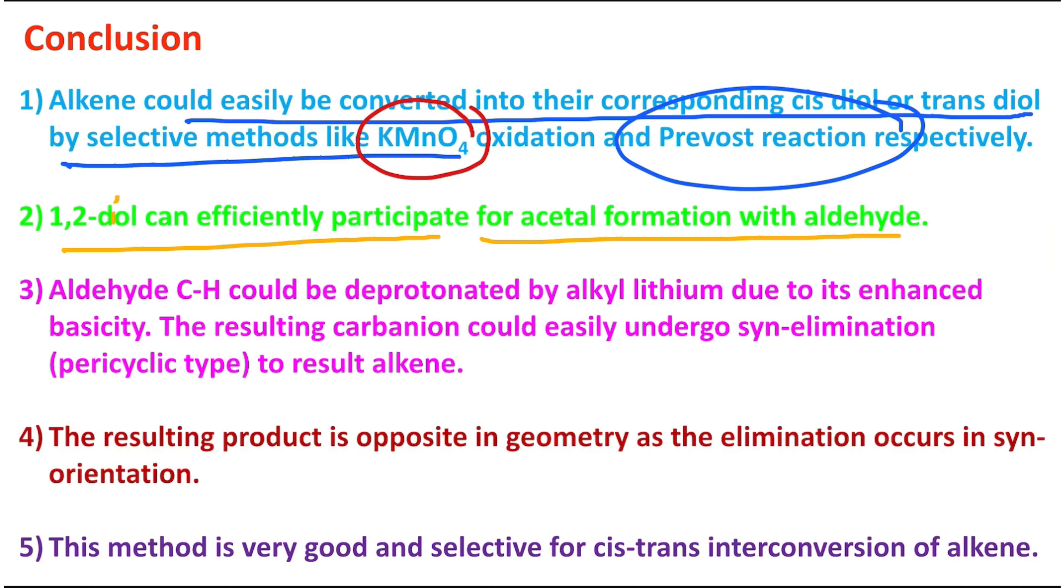Five-member ring formation is significantly easier due to proper conformational orientation. Furthermore, this aldehyde C-H could be deprotonated by alkyl lithium due to its enhanced basicity. It's a strong base, as I told you - sp³ carbanion. The resulting carbanion is resonance stabilized because it's a benzylic type which can undergo delocalization with the benzene ring, and it can easily undergo syn-elimination or pericyclic type reaction to result in an alkene derivative.